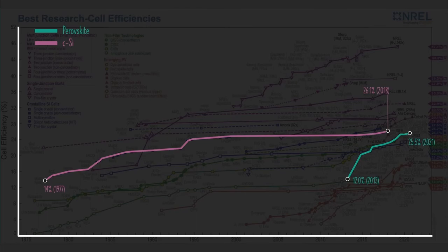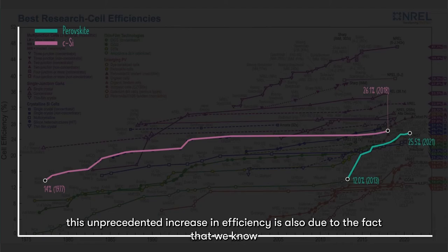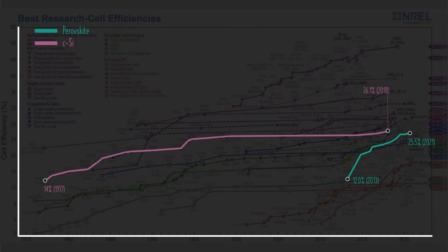Apart from perovskite being a super material for solar cells, this unprecedented increase in efficiency is also due to the fact that we know much more about the physics behind solar cells now compared to before, making improvements easier and faster.